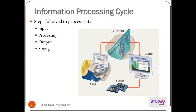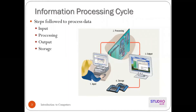Now we have the information processing life cycle. There are four steps, and by following these steps it will complete the information processing life cycle. In the diagram you will see: input, processing, output, and storage.